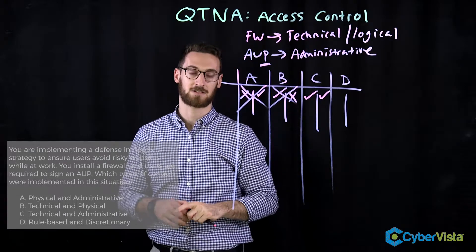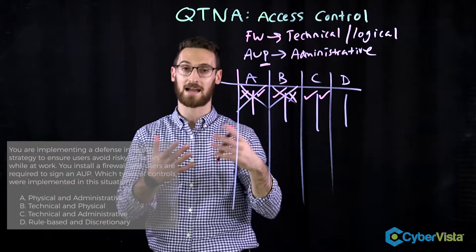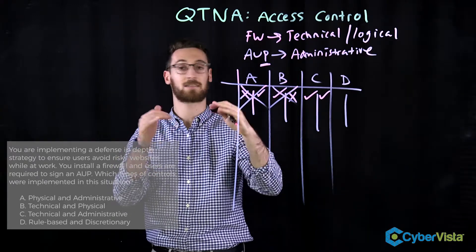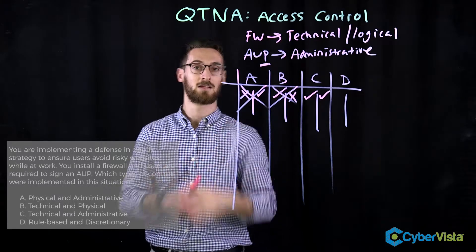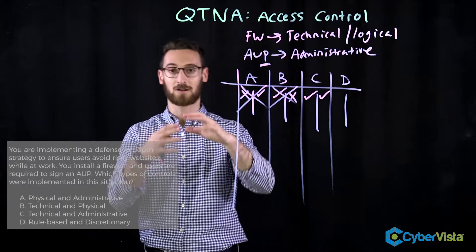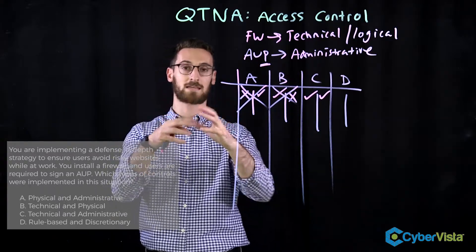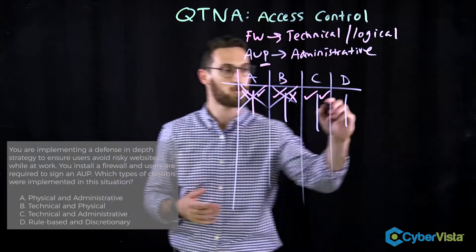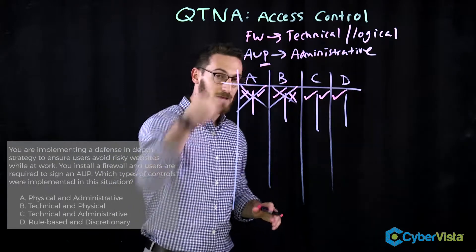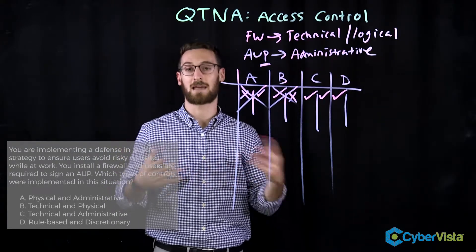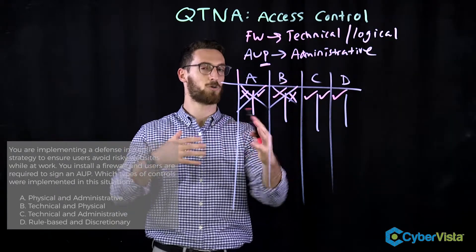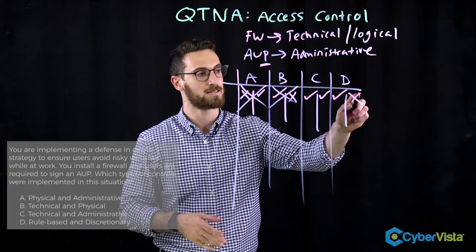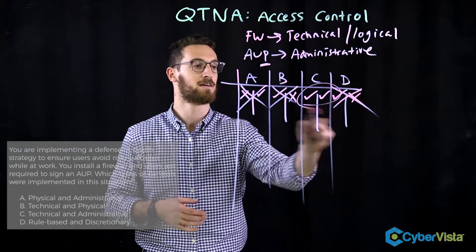Let's look at D: rule-based and discretionary. This is interesting because rule-based access control is actually an example of a firewall — or a firewall is an example of rule-based access control — meaning it has a predefined list of rules. In this case, a firewall would use an ACL — an access control list — that filters traffic using that predefined list, telling it what to allow and what to deny. Therefore, a firewall is rule-based. But the AUP is not discretionary, because the policy is actually mandatory. Discretionary is more about the data owner deciding who should have access to something. So D is only half right and not the right answer choice. Therefore, C is the right answer.